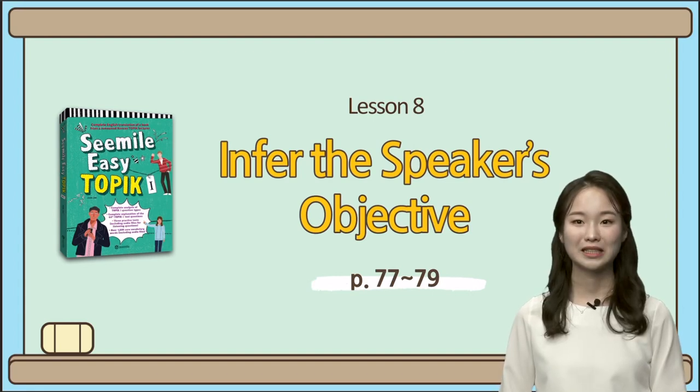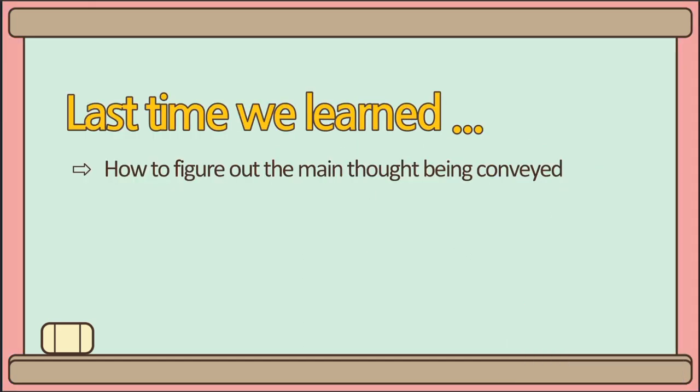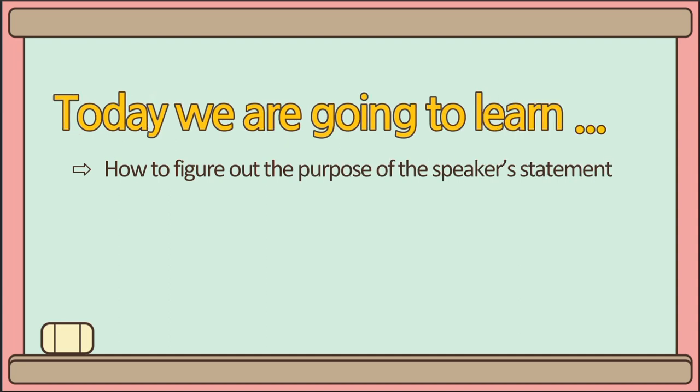Hi guys, I'm Emma from C-Mail and this is the 8th lesson of our Easy Topic 1 class. Last time, we covered how to handle the 6th question type of the listening section, which involves understanding the speaker's main thought. Today's topic will be about the 7th type of question, which requires you to figure out the speaker's purpose or the objective from their statements.